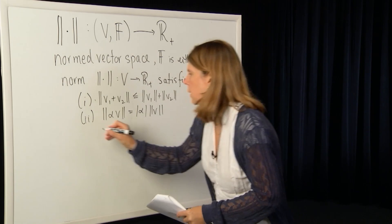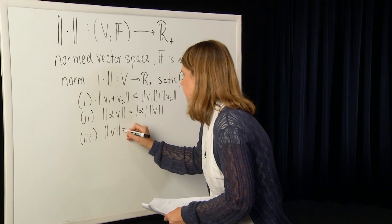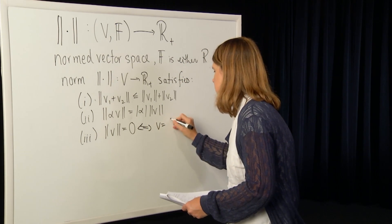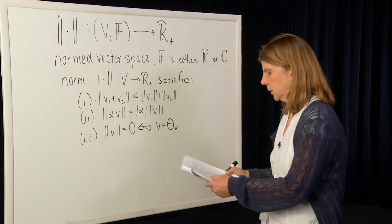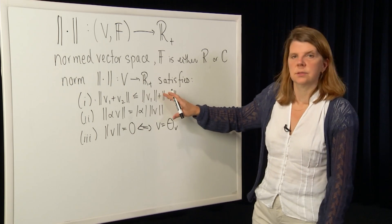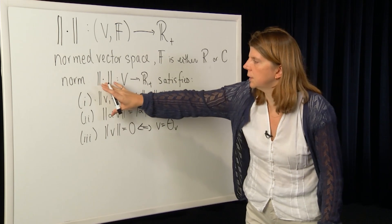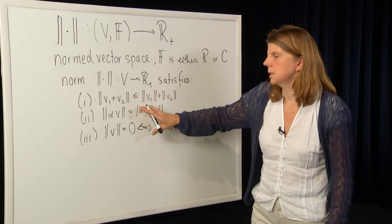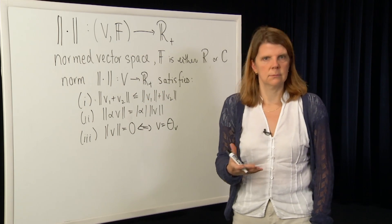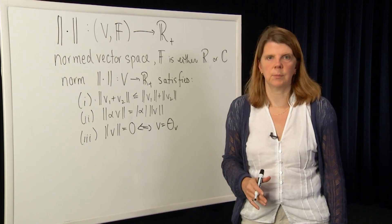Back to our properties. The third property is that if the norm of a vector evaluates to zero, then that's equivalent to the vector itself being the zero vector in the corresponding space. So the norm has to satisfy these quite specific properties. Given a definition of a map which satisfies these properties, it is a norm. But if somebody gives you a candidate norm, you have to check that it satisfies these three properties.